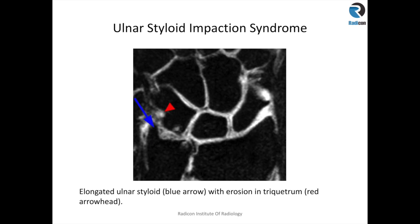That is a case of ulnar impaction. In this case, there is also ulnar lunate abutment or ulnar carpal abutment. You can see cystic change in the distal ulnar and cystic change in the triquetrum. There is likely a central perforation in the TFC disc as well — you can't see any TFC between the ulnar and the lunate on this image.